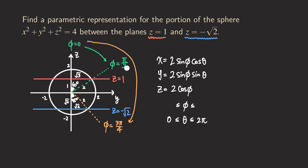So we get the lower bound and the upper bound: the lower bound is pi over 3 and the upper bound is 3 pi over 4. Now we have the complete parameterization. That's it for this problem — thank you for watching and I'll see you next time.